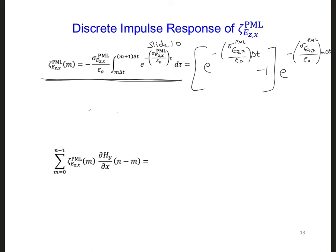To make things easier, let's set the term in the bracket equal to a coefficient. So we're going to set this equal to C ex, where the e subscript indicates that this coefficient is for an electric field update. We're going to be using it for the ez update. And the x subscript indicates that it's for a PML in the x direction.